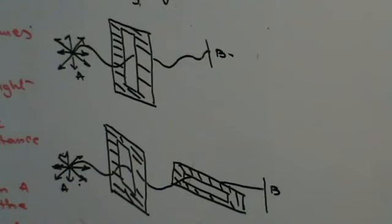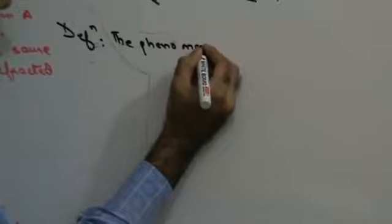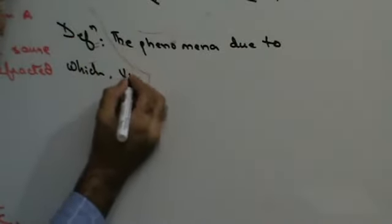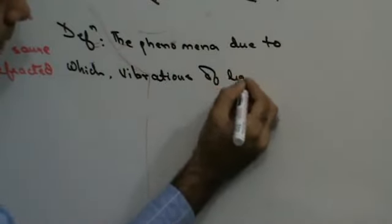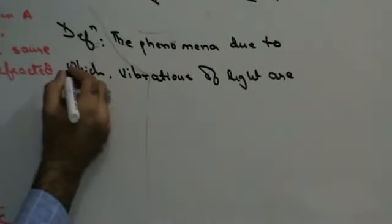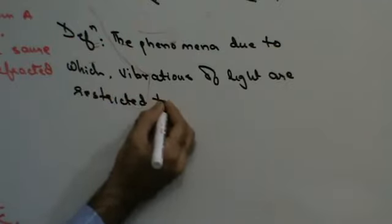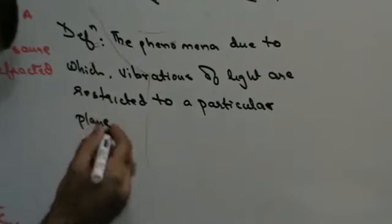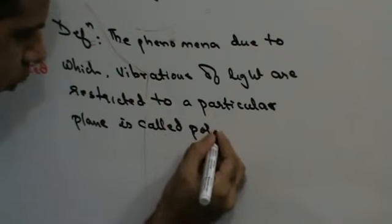Polarization is a phenomenon due to which vibrations of light are restricted to a particular plane. A phenomenon in which the vibrations of light are restricted to a particular plane is called polarization of light.